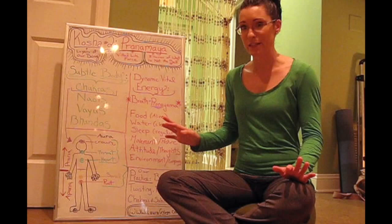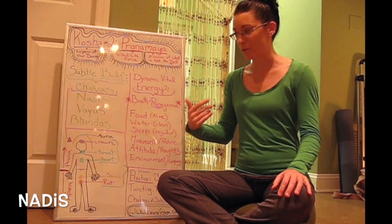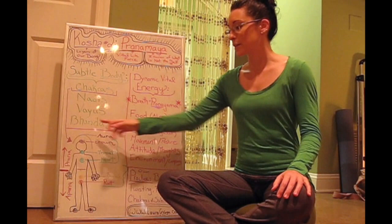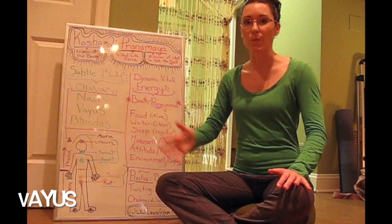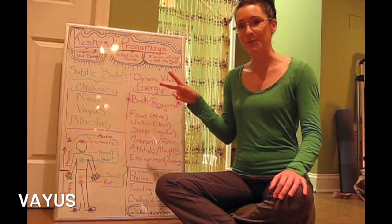The other parts of the subtle body that we won't get into as much detail about today, but I'll just mention are the nadis, which are the energy channels that go everywhere through the body. There's a central energy channel right through the middle that connects all of the chakras together. The vayus or the winds of the body, and we'll talk a little bit about this in our practice today.